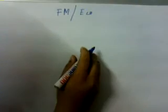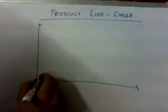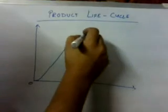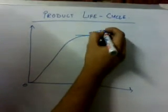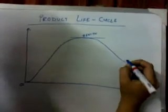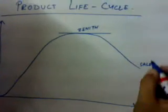We have two or three financial management and economic problems to discuss. The first is the product life cycle, where after a product is launched, it reaches maturity and the highest point of sales, known as the zenith, and then starts declining. So we have this sales line of the product — it reaches the zenith and then gradually declines.